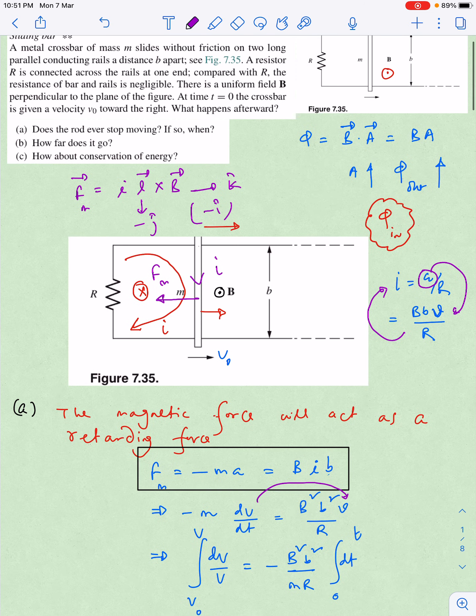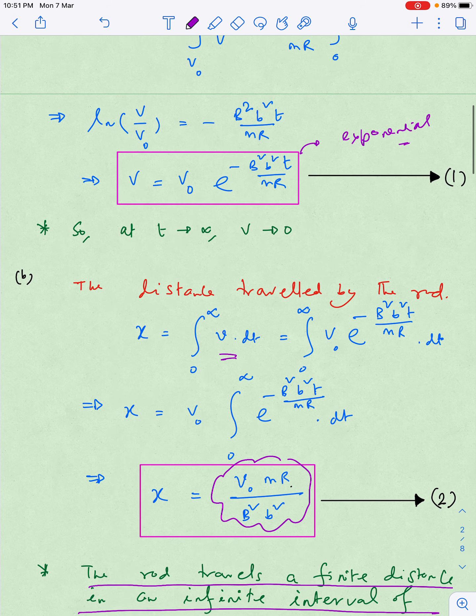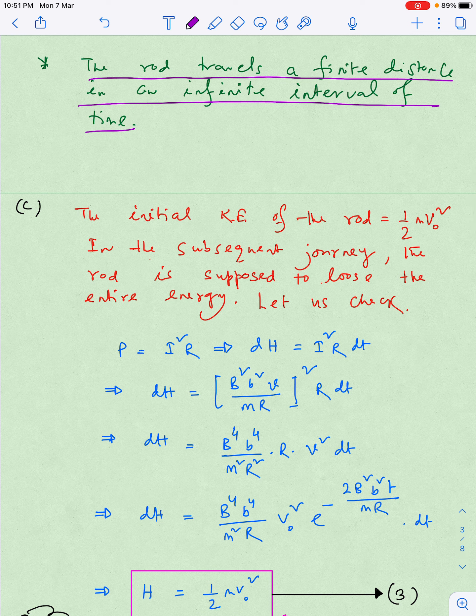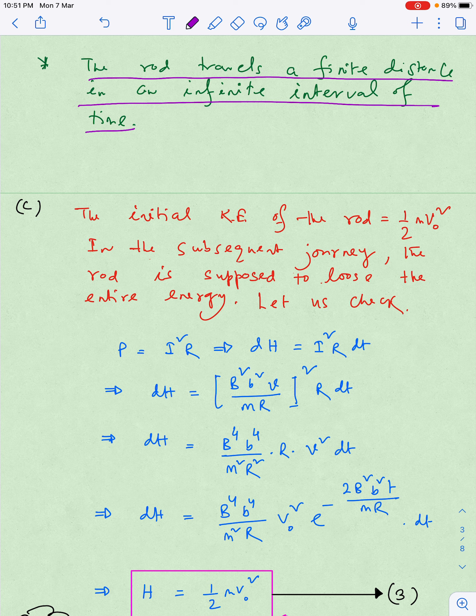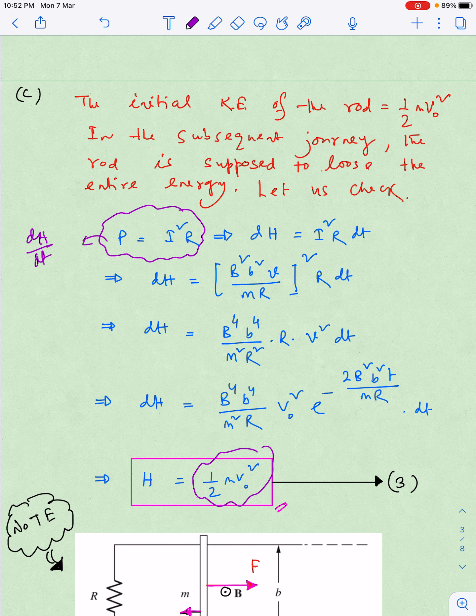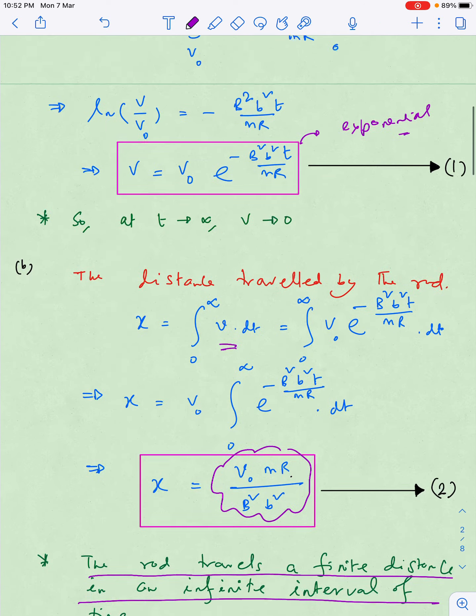Third part is asking what about the conservation of energy. We will check what happens. My simple logic is that whenever the rod is moving, induced current is developed, and whenever there is a current through a resistor there will be a heat loss. So I will try to calculate the heat loss, what is the amount of it. For that I will take the electrical power P equal to i squared R, and P here is nothing but dH dt. So if I integrate H, I will get wow, that is half mv squared. That means whatever the kinetic energy that the rod was carrying initially will entirely be explained in terms of heat energy.